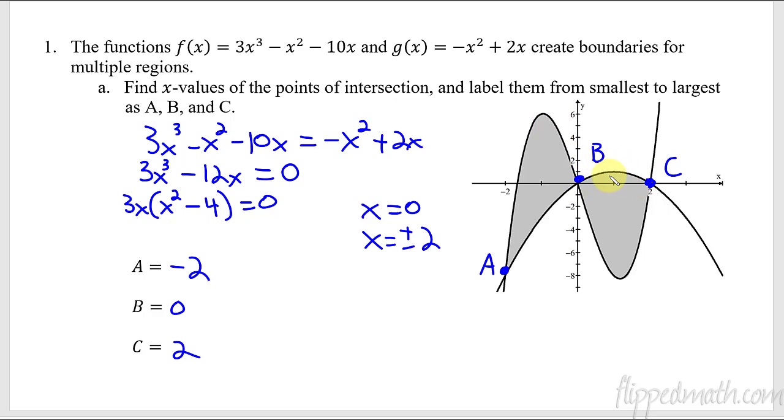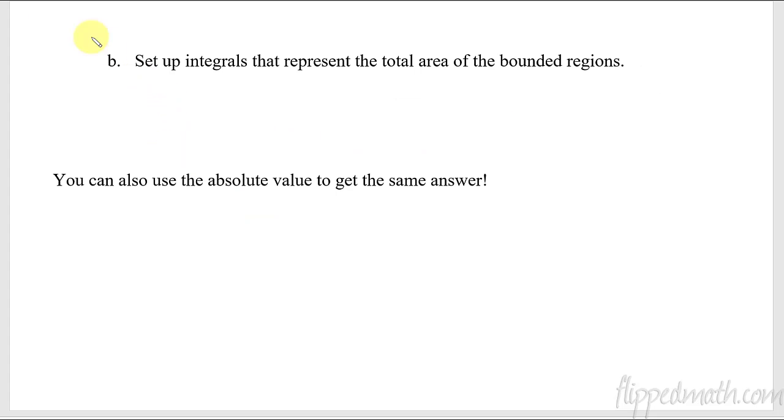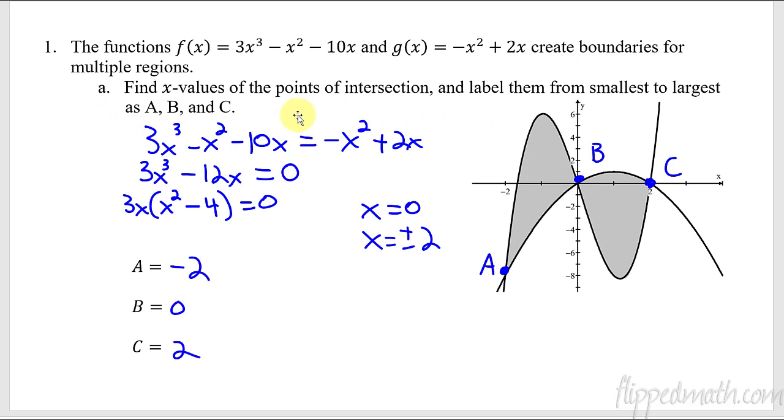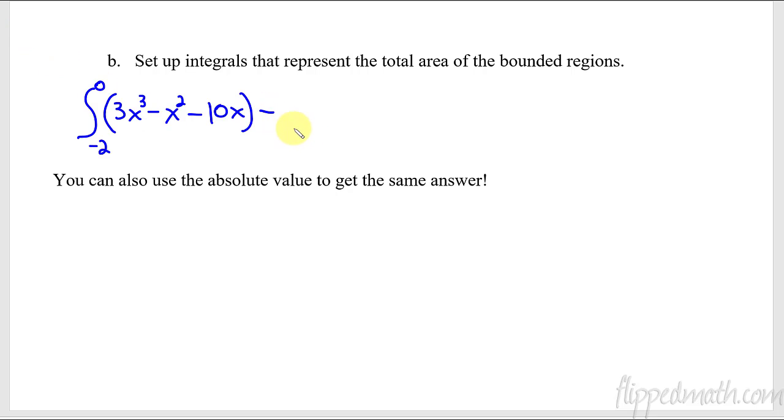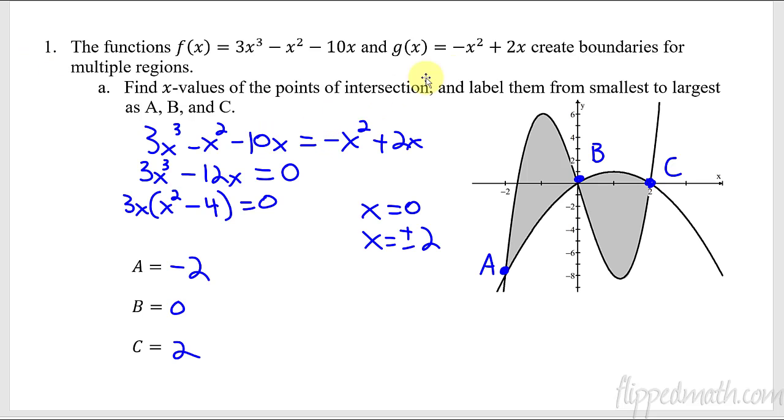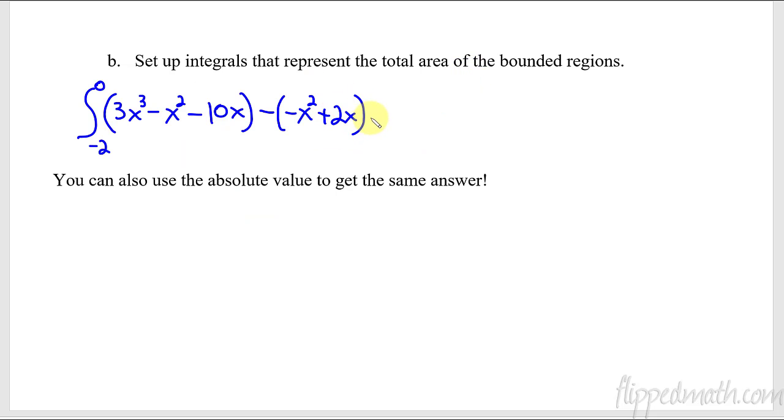And so it switches the functions, which one we put first with the subtraction. We've got our first integral from, and I could say a to b, but the numbers are so simple, right? I mean, it's just zeros and negative 2, positive 2. Let's just put negative 2 to 0. Now, which one came first? It was the cubic. So let's write that out first. And then we will subtract the one that was the quadratic, which was this one, negative x squared plus 2x. And if you notice, I made sure that there were parentheses around this because I am subtracting the whole thing. And then I have to say that it's with respect to x.